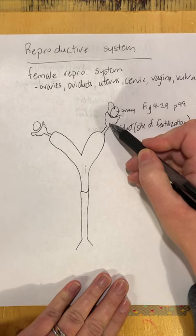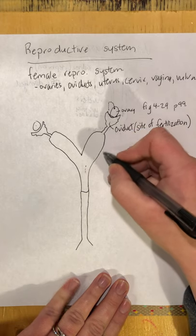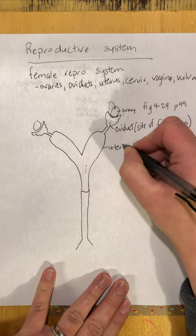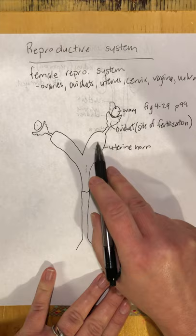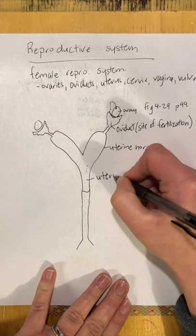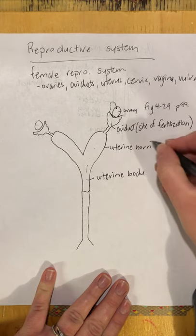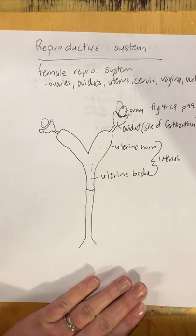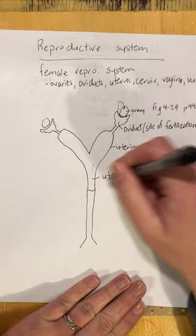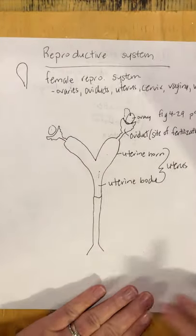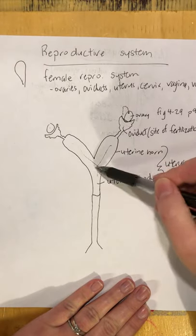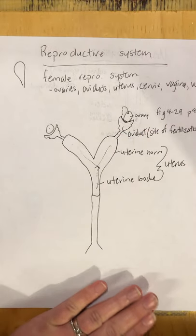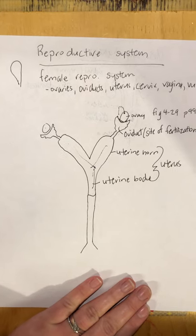That embryo travels down through the oviduct and into the uterus. The uterus is divided into two parts: the uterine horn — and there are two horns — and the uterine body. In human females we tend to have just a single uterus, basically a small sac. But in dogs and cats they have a y-shaped uterus, which gives them more room for implantation to be able to have multiple births from every pregnancy.